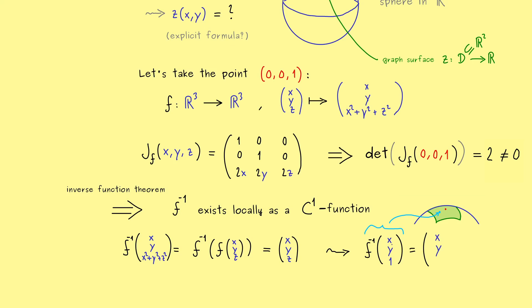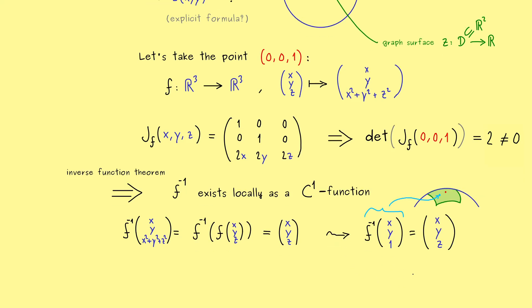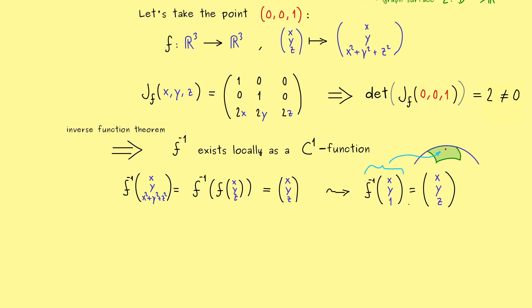In other words, this inverse function gives us the description for the variable z. Or to put it in other words, the last line here, the last component of f inverse gives us the function z(x, y). So our inverse function theorem gives us the explicit formula for the function z(x, y).